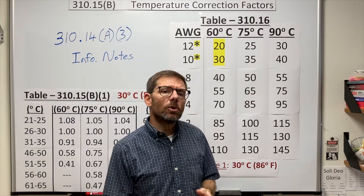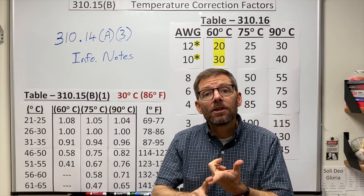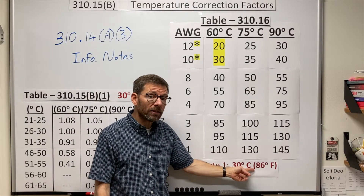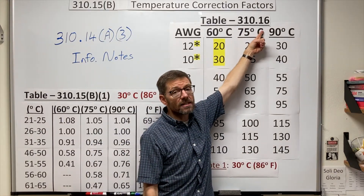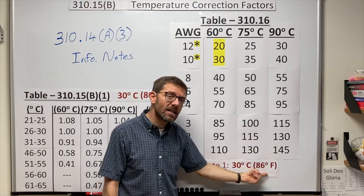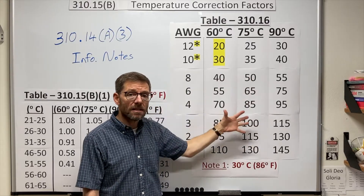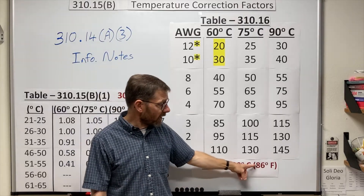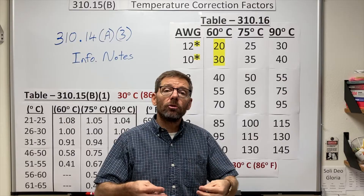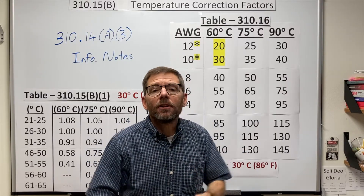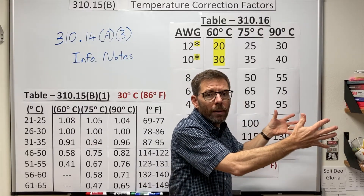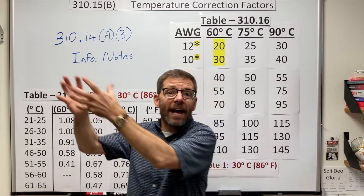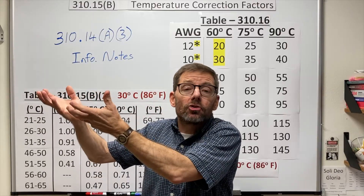So where am I going to worry about this at work? Well, outdoors or in non-air-conditioned buildings in parts of the country where temperatures are often hotter than the conditions required for your ampacity tables. Table 310.16 requires an ambient temperature of 86 degrees Fahrenheit for these ampacities. If you're hotter than that, you'll need to reduce the ampacities. But interestingly, if your environment is cooler than that, you may be able to increase the ampacities. Other locations might be industrial facilities with hot equipment, factory floors, or attics.